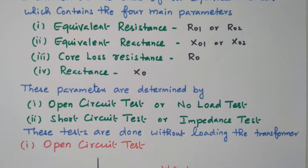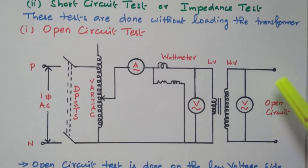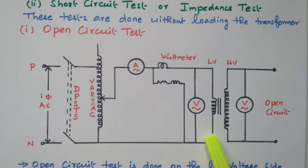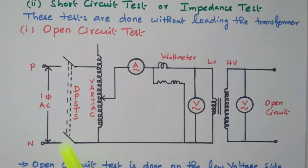In this video we will see the open circuit test. The open circuit means the secondary of the transformer is kept open — there is no load connected on the secondary side. Consider this transformer: this is the primary winding, this is the secondary winding. This is a low voltage winding, and the no load test is always performed on the low voltage winding. The high voltage winding is kept open.